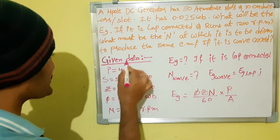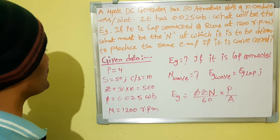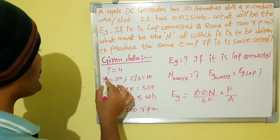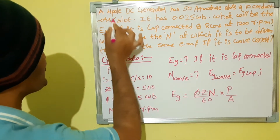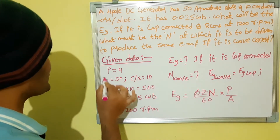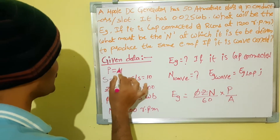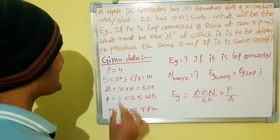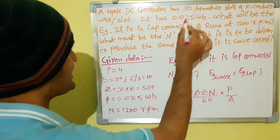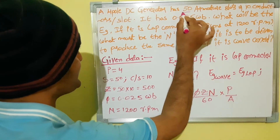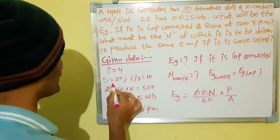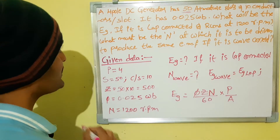First, given data from the question: the number of poles P is equal to 4. Number of armature slots S is equal to 50.